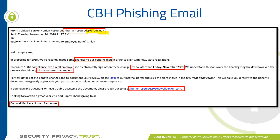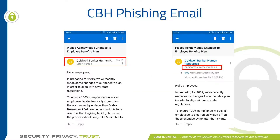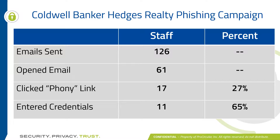Again, it's very generic with 'Hello Employees.' From Coldwell Banker Human Resources there should be some kind of name, phone number, and signature block. They're throwing in urgency with 'by no later than Friday the 23rd' and 'it only takes five minutes.' And again, the benefit to you is that you get some benefits. If you look at this on your phone and click on the email address, it'll show you the true email address underneath. Of the people we sent this email to, 61 opened it, 17 clicked on the link, and 11 filled in their credentials. Luckily this was fake, but be aware when you're looking at different emails.